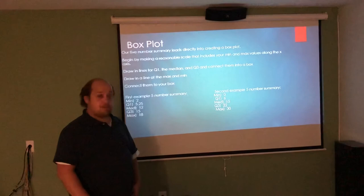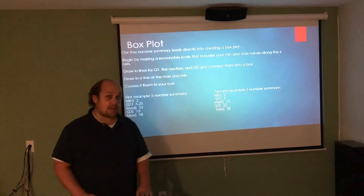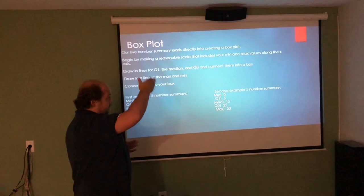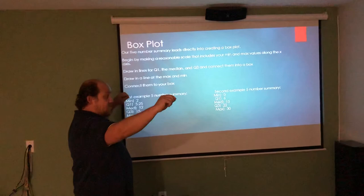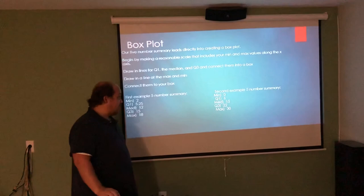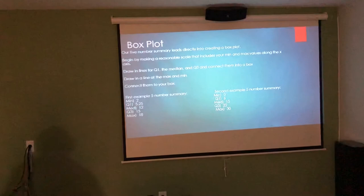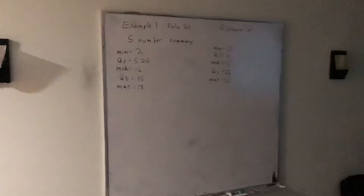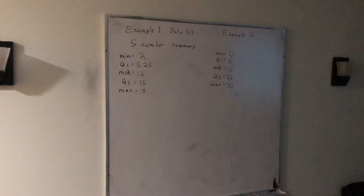What I can then do with these 5 number summaries is create a box plot. I'm going to actually go over to the whiteboard just to show you step by step how to create these box plots. But basically, I fit a scale to the bottom. I draw lines at each of Q1, median, and Q3. I connect those to make a box. Then I draw lines at each of the maximum and minimum and I connect them to my box. So you're about to see me do it on the whiteboard, where I'm going to take our first example, our second example, and make a box plot for each of them.